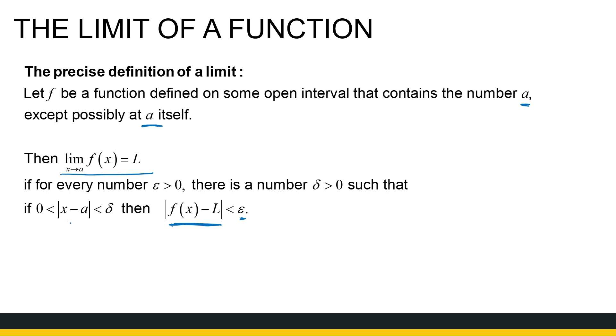If I am delta away from x, the absolute value of x minus a - that's how far I'll go away from x - if the distance between x and a is less than delta, then my y values distance will be less than epsilon. So, let's look at an example.